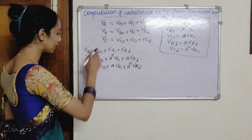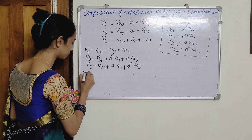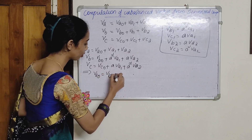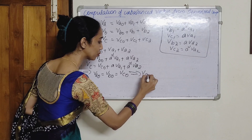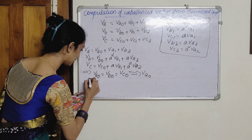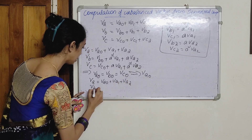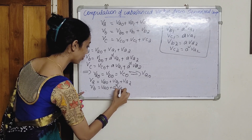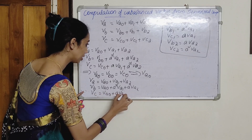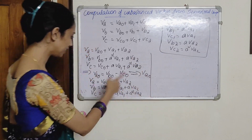We can establish that Va0 is equal to Vb0 is equal to Vc0, which is approximated as Va0. So the simplified expressions are: Va = Va0 + Va1 + Va2; Vb = Va0 + A²·Va1 + A·Va2; and Vc = Va0 + A·Va1 + A²·Va2. Now I am going to write this in matrix form.